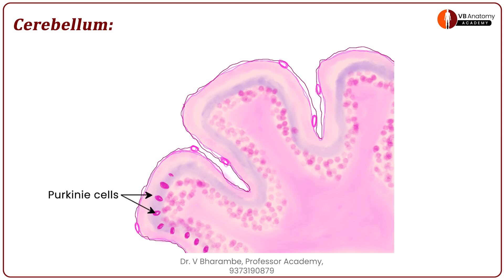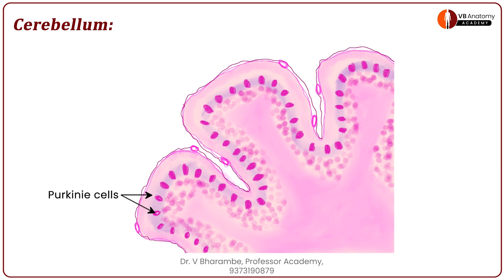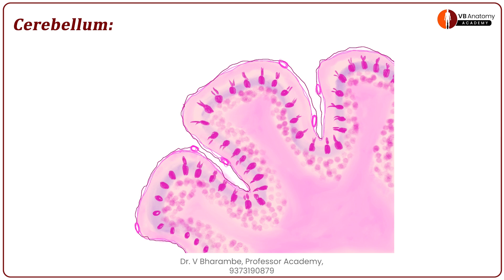Now let us begin to add the single layer of cells which is the Purkinje cell layer. These are a single layer of large cells called Purkinje cells. Each cell has an apical region and a basal region. Its dendritic tree spreads out into the molecular layer, and its axons descend downwards into the white matter of the cerebellum. Let us add the nuclei now.